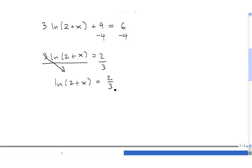Now we're ready to rewrite in exponential form. For the natural log, we always want to imagine a little base e down there. So the exponential form of this is going to be e^(2/3) equals 2 plus x.